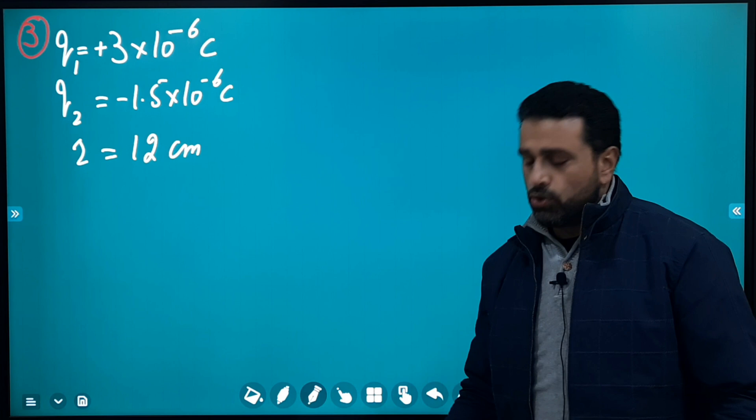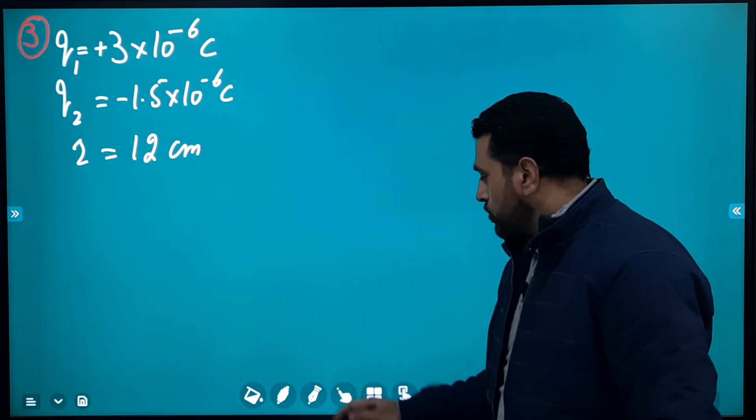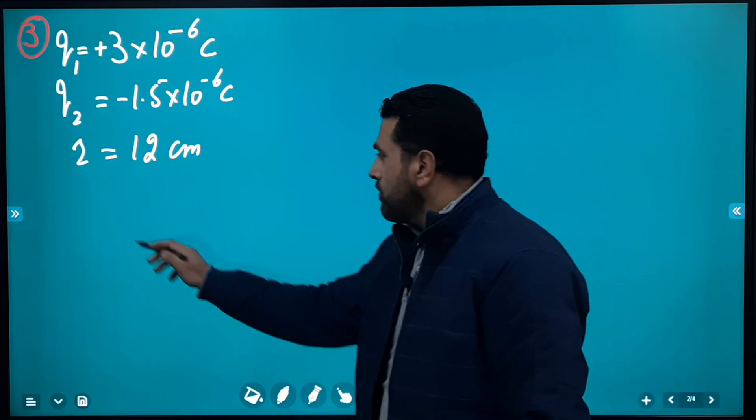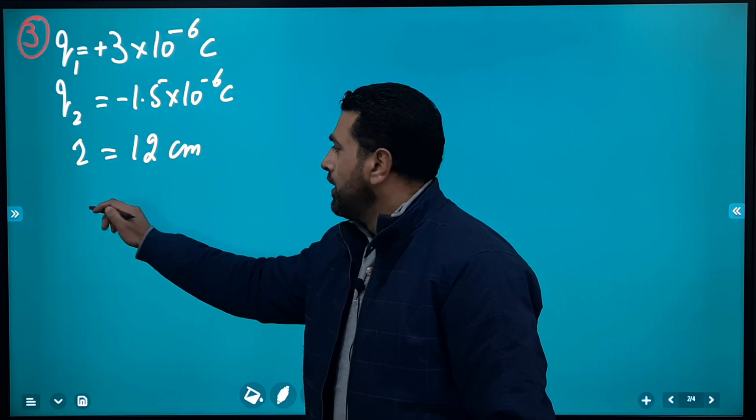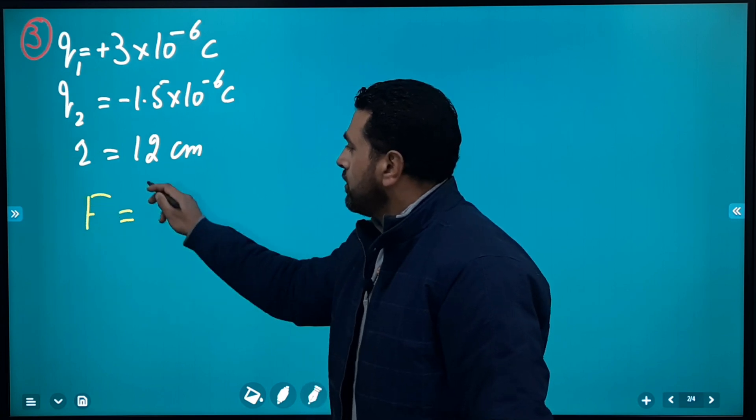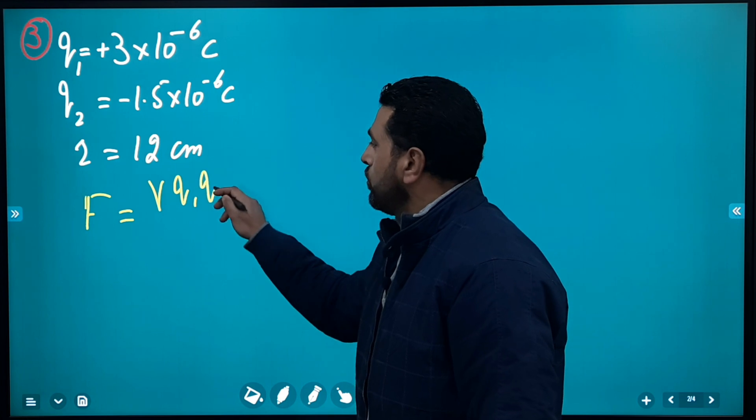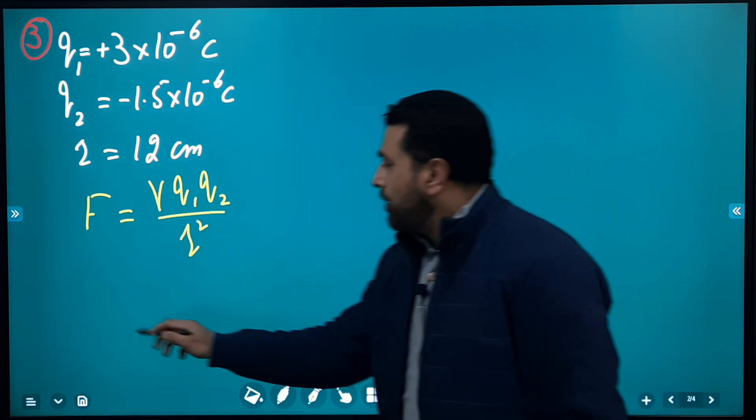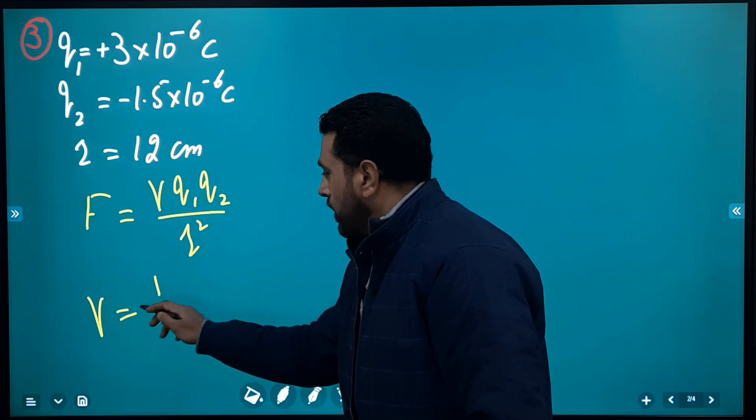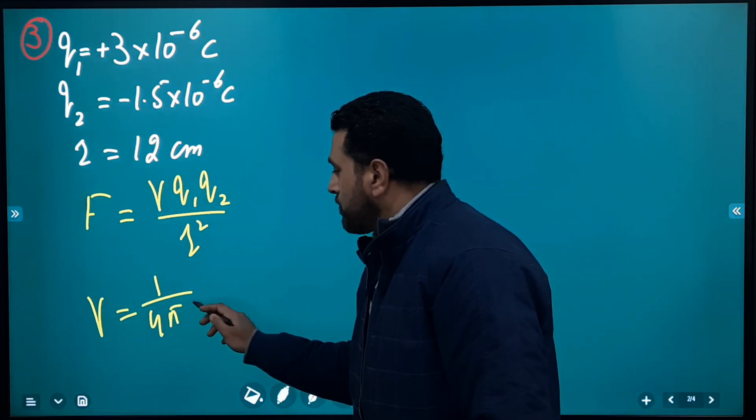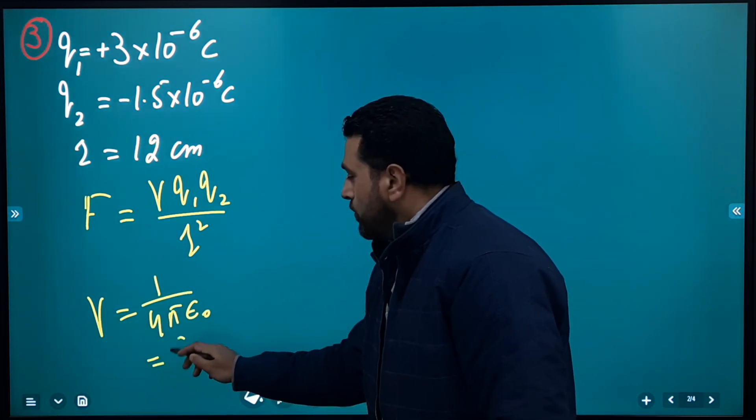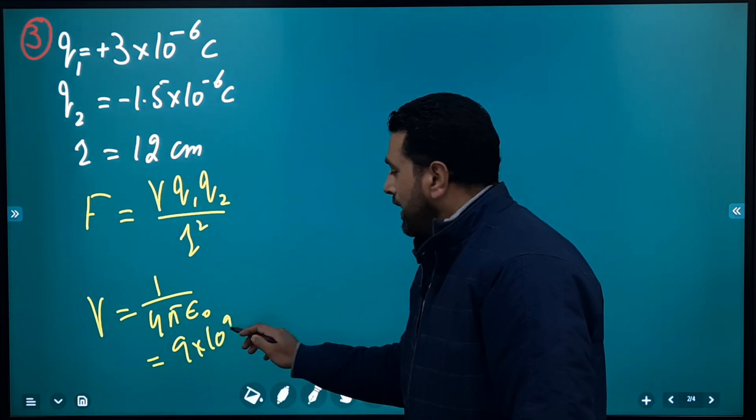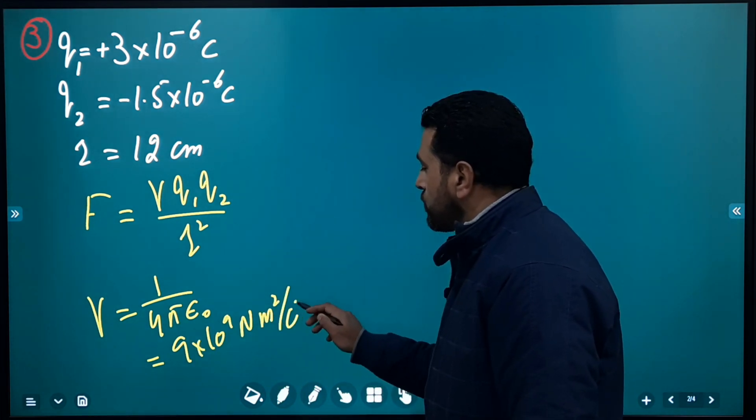So it's just a substitution problem. We'll use Coulomb's law, which we already know. F equals γQ₁Q₂ divided by r². γ I'm using for electrostatic constant, which is 1/(4πε₀), whose value is 9×10⁹ newton meter squared per coulomb squared.